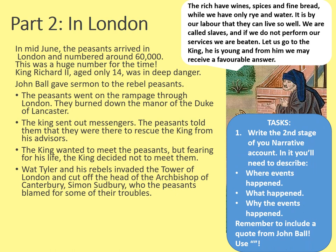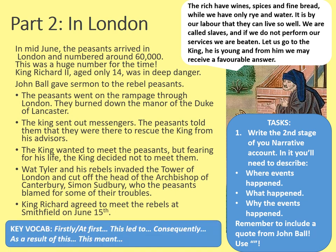Write the next stage of your narrative account. Describe where the events happened, what happened, and why. Remember to include a quote from John Ball and use quote marks to make clear you are using a quote. Also note that King Richard agreed to meet the rebels at Smithfield on June 15th — that will be our next stage. Use the key vocab to connect your story and make sure it makes sense. Pause the video and complete the next stage of your narrative.